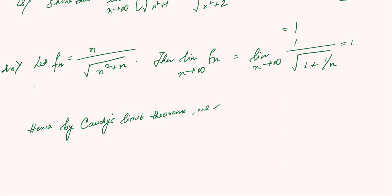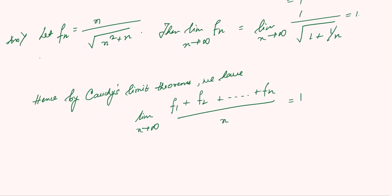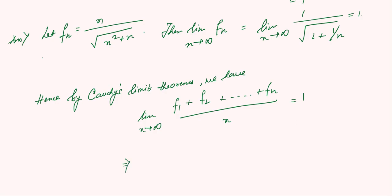we have limit n tends to infinity of (f_1 plus f_2 plus dot dot dot plus f_n) divided by n is equal to 1.